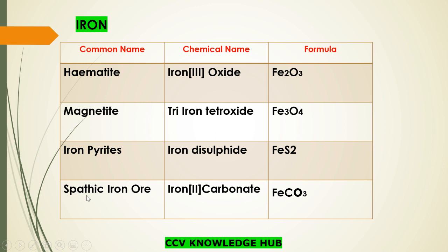The next one is spatic iron ore — iron(II) carbonate. In this particular compound, iron is present in the plus 2 state. The formula is FeCO₃.